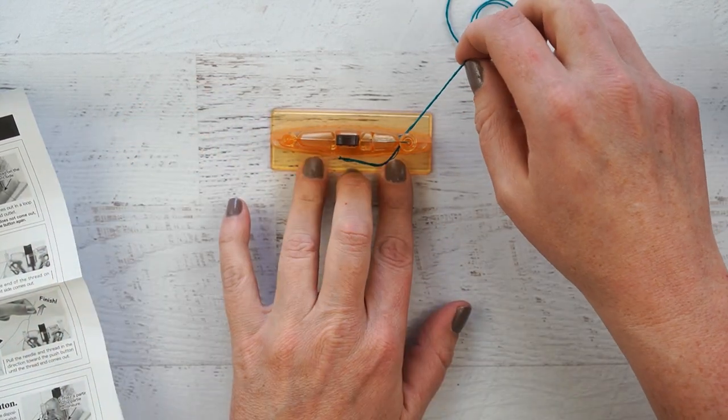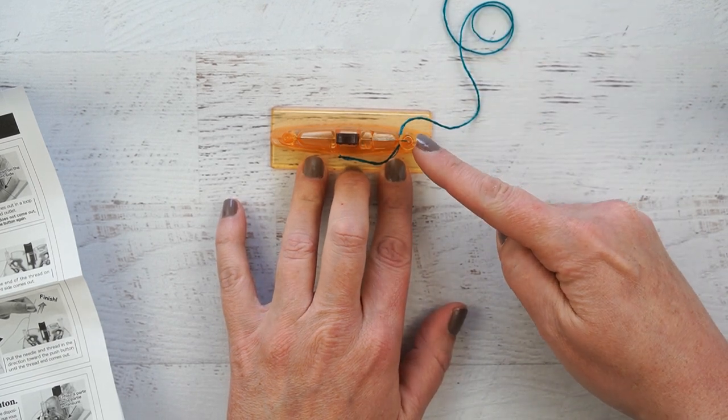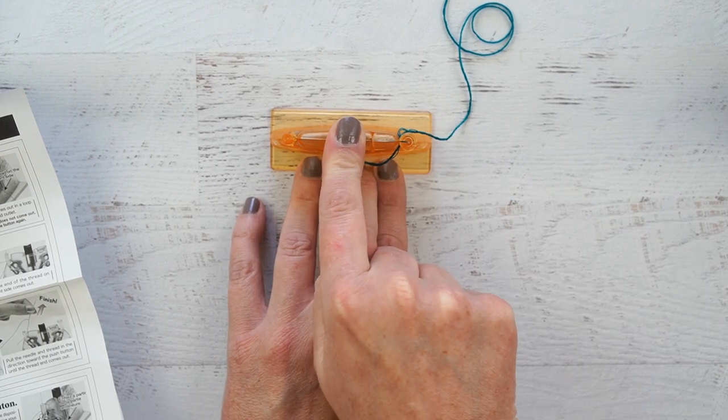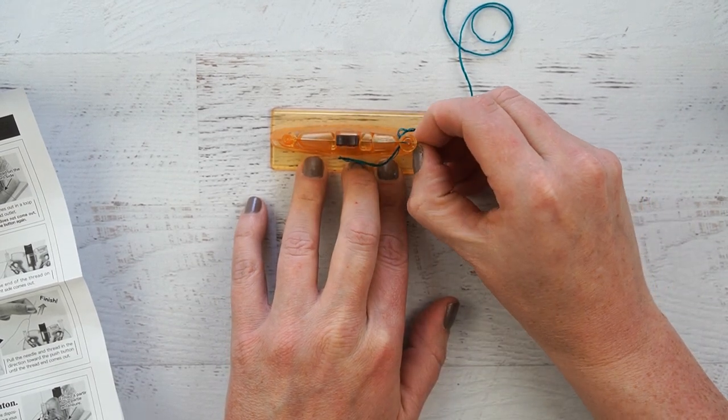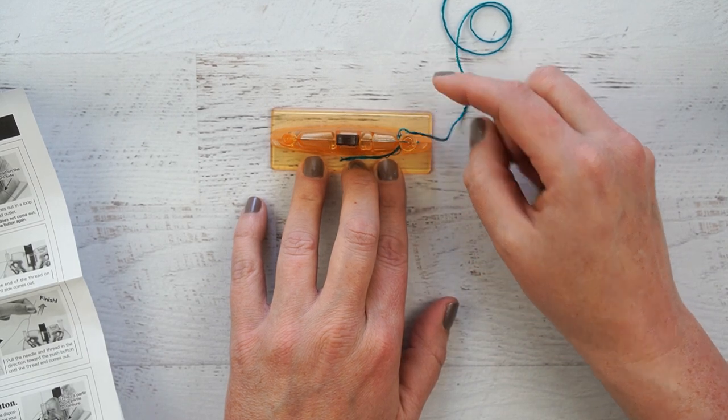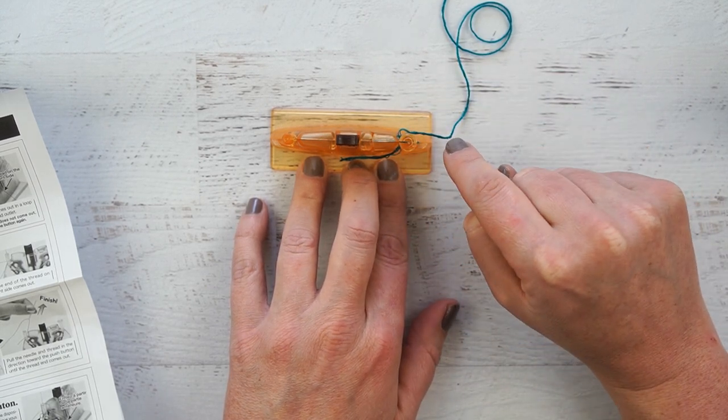Did that even do anything? So the thread's supposed to then come out this side in a loop. There's nothing there. Let's try again. Okay, so I did get a little bit of a loop over here, but I can tell that we do not have all six threads in there.